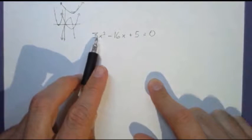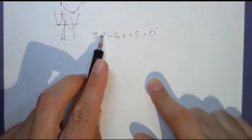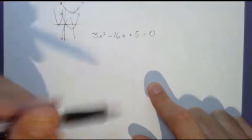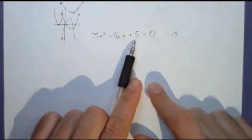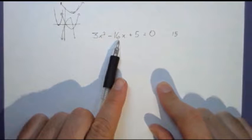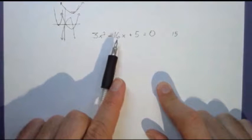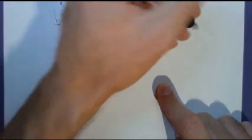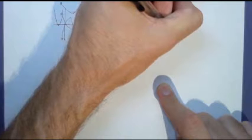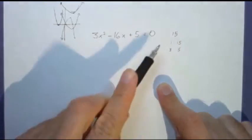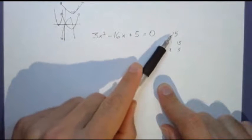We want to first multiply the coefficient of your squared term with your constant term. Three times five gives us fifteen. So now we need to factor fifteen to find numbers that make six. How many ways are there to factor fifteen? We can have a one and a fifteen, or a three and a five. That's really the only numbers that make fifteen.